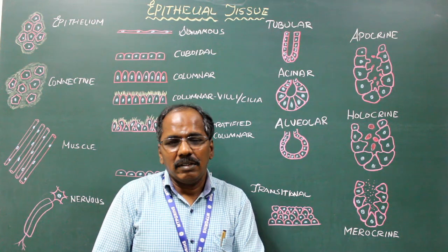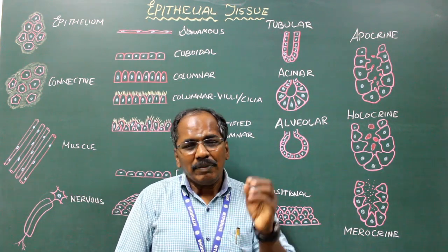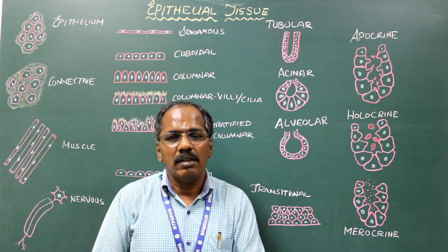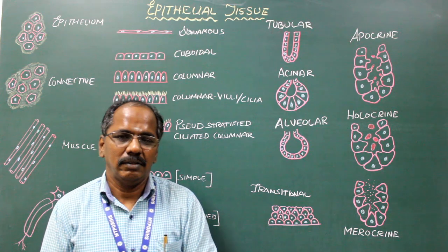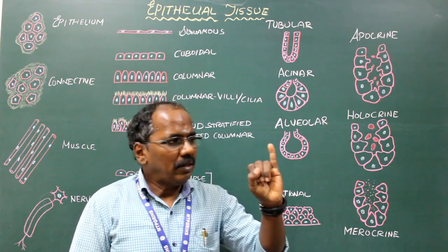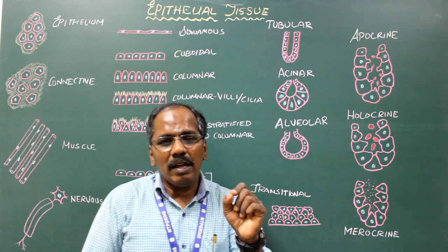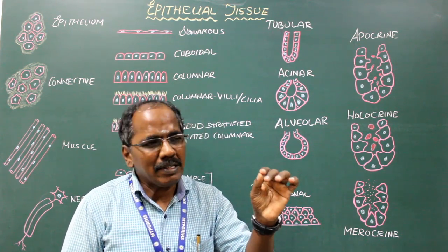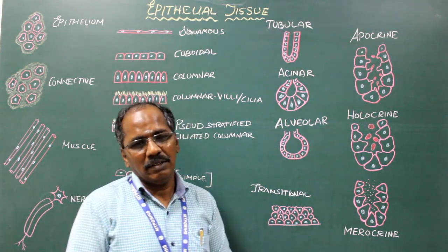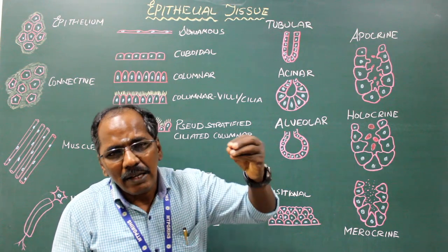Glands are outgrowths of epithelial cells, or epithelial cells specialized in the function of secretion. Classification of glands: depending upon the way of secretion, glands are divided into exocrine glands and endocrine glands. Exocrine glands pour secretions through a duct — examples: salivary gland and liver. Endocrine glands are ductless and pour secretions directly into the bloodstream — examples: pituitary gland and thyroid gland.